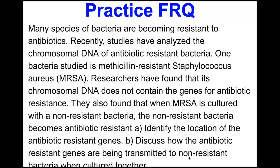Practice FRQ: Many species of bacteria are becoming resistant to antibiotics. Researchers analyzed chromosomal DNA of antibiotic-resistant MRSA — methicillin-resistant Staphylococcus aureus — and found that its chromosomal DNA does not contain the genes for antibiotic resistance. However, when MRSA is cultured with non-resistant bacteria, those bacteria become antibiotic resistant. Question A: identify the location of the antibiotic resistance gene. Question B: discuss how the antibiotic resistance genes are transmitted to non-resistant bacteria when cultured together. We'll discuss this in class.